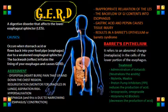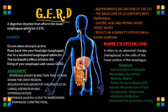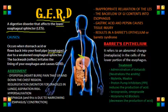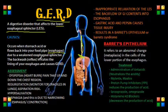Gastroesophageal reflux disease, or GERD, is a digestive disorder that affects the lower esophageal sphincter, or LES, which is the ring of muscles between the esophagus and the stomach. What occurs is that stomach acid or stomach contents have a backflow into the food pipe — the esophagus — due to a weakened esophageal sphincter.